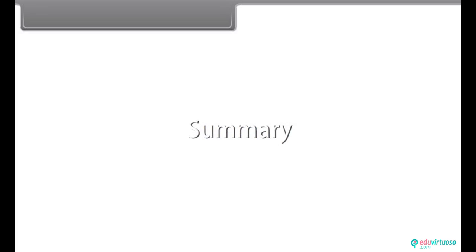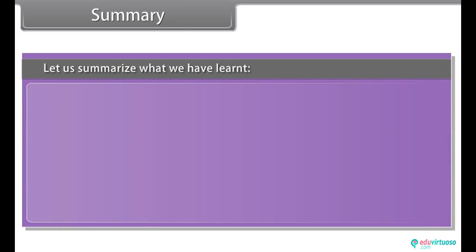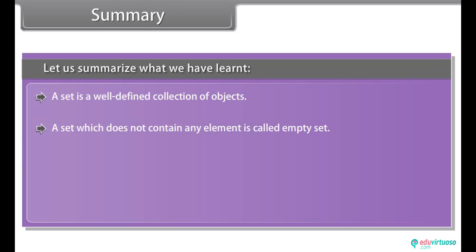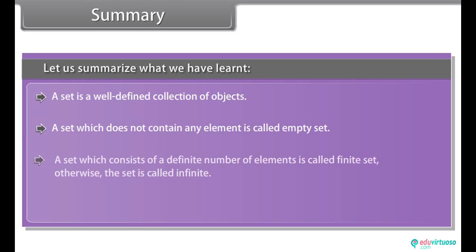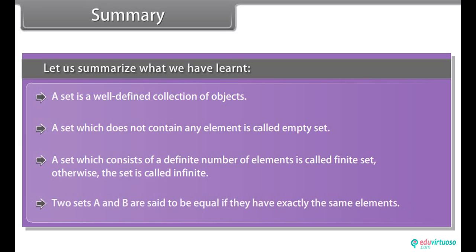Summary. Let us summarize what we have learned. A set is a well-defined collection of objects. A set which does not contain any element is called empty set. A set which consists of a definite number of elements is called finite set. Otherwise the set is called infinite. Two sets A and B are said to be equal if they have exactly the same elements.